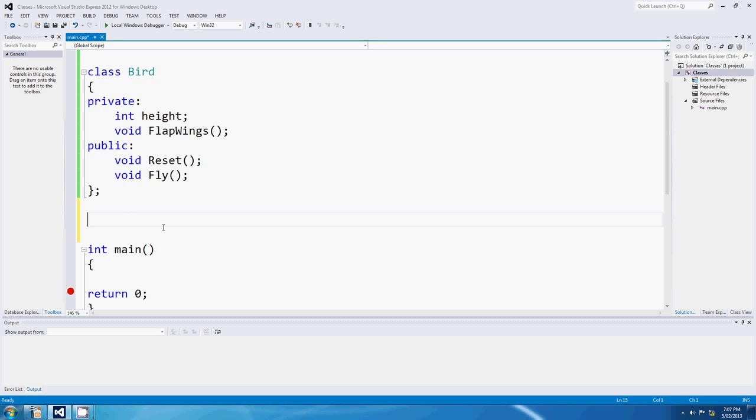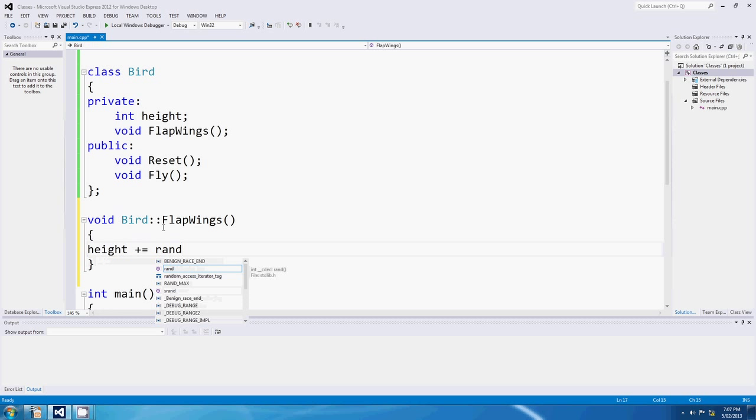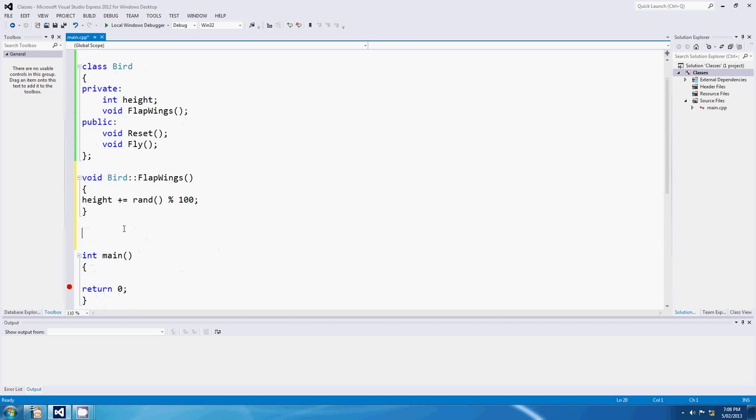Alrighty, so now we'd better define flapWings and reset and fly. So void bird, then the scope operator flapWings, just like that. And I might say height plus equals rand mod 100. Okay, so when the bird flaps its wings, its height gets some value from zero to 99 added to it. He flaps his wings and he flies higher. That's pretty good. Good class. This is cool. Void reset. Settle down. You've got to put the scope operator in.